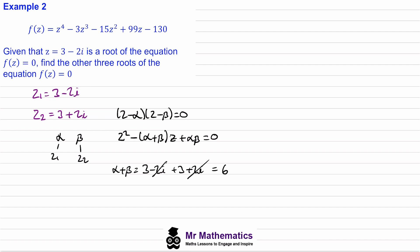The constant term alpha beta is the product of the roots: three minus two i multiplied by three plus two i. Expanding gives nine minus four i squared. Since i squared equals negative one, this becomes nine plus four equals thirteen. So our quadratic factor is z squared minus six z plus thirteen, and this equals zero.